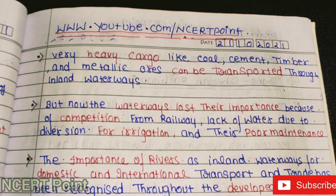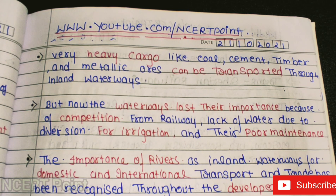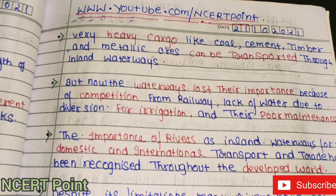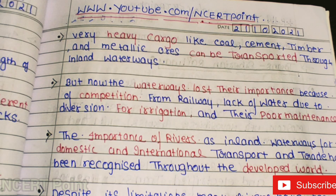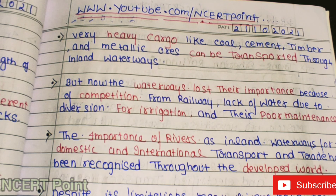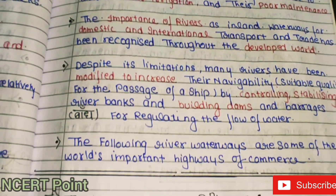Very heavy cargo like coal, cement, timber, and metallic ores can be transported through inland waterways within a country. However, waterways have lost some importance due to competition from railways, which are now highly developed. The lack of water due to diversion for irrigation and poor maintenance also reduces the viability of waterways. Despite this, the importance of rivers as inland waterways for domestic and international trade is recognized throughout the developed world.